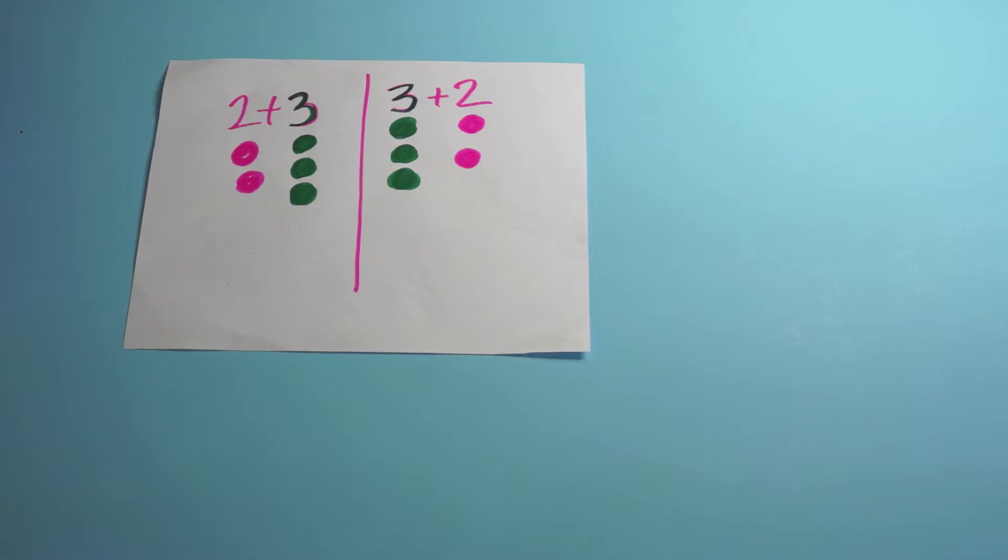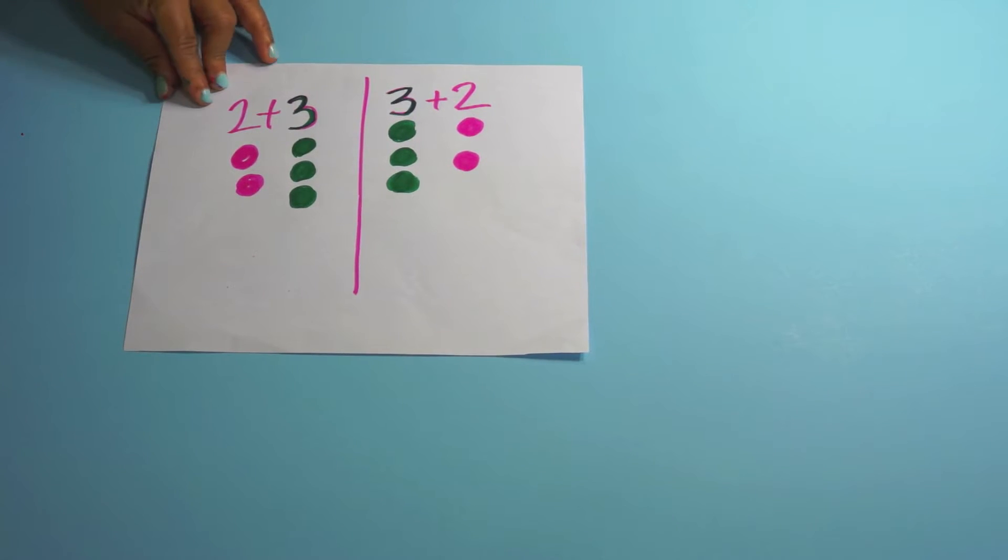Here's just an example of that. You can have kids roll the dice and then write the expression down and then write the turnaround fact for that and illustrate it so that they can see what it looks like.